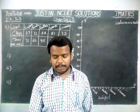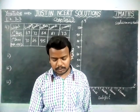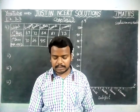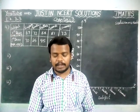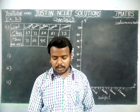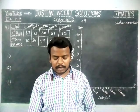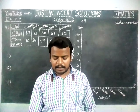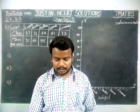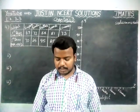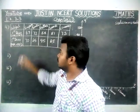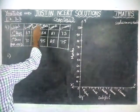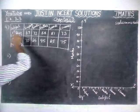The question is: the performance of a student in first term and second term is given. Draw a double bar graph, choosing appropriate scale and answer the following. The subjects are English, Hindi, Math, Science and Social Science.